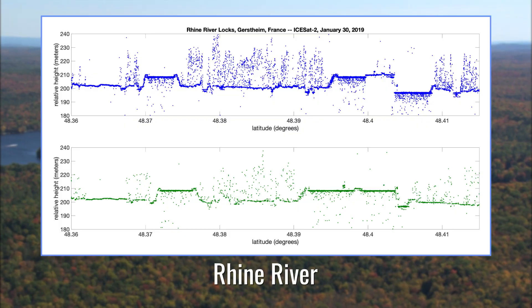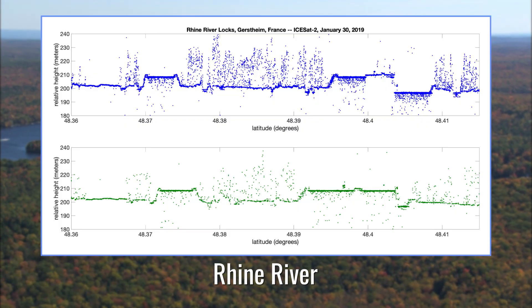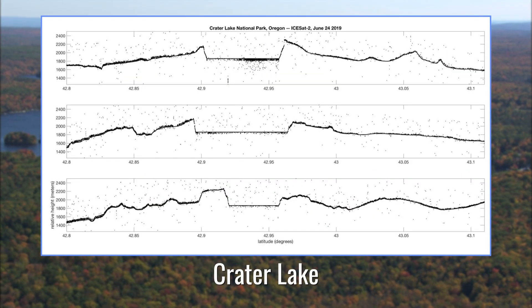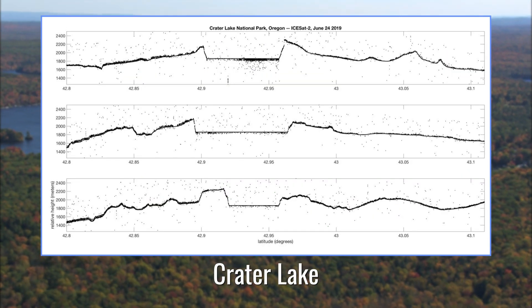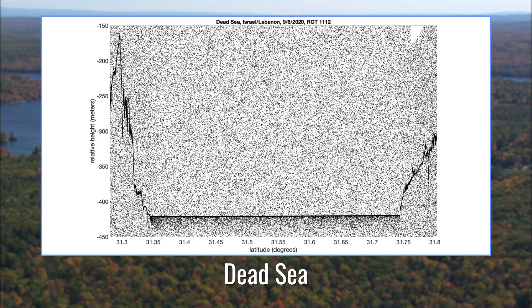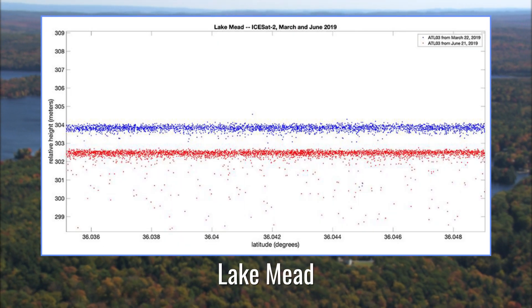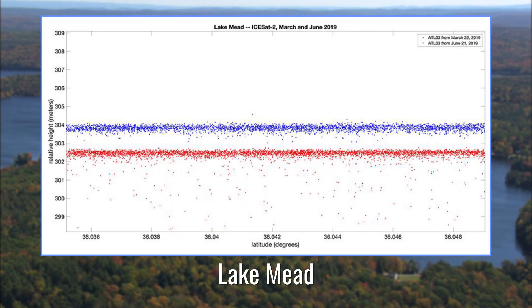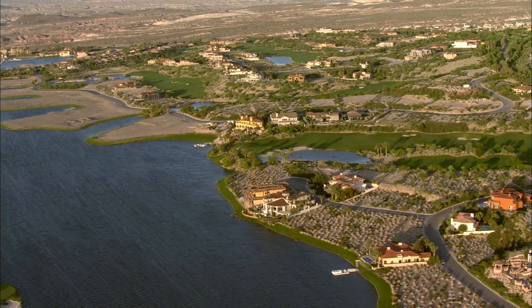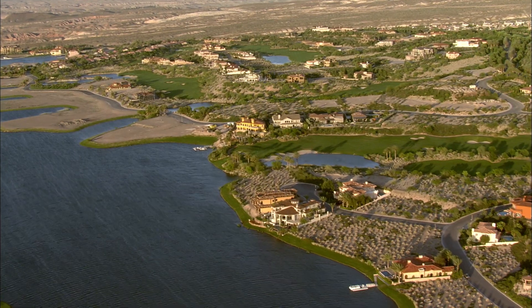In this study, we use data from NASA's ICESat-2 satellite, which launched in October 2018, to better understand how surface water varies around the world. We intersect data from the satellite — which tells us the water level, essentially how much water is in a lake — with a global dataset of where surface water bodies are, and which ones are reservoirs and which ones are not.